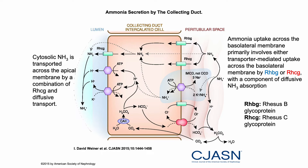The ammonia cycle is complex: it is first generated inside the proximal tubule, goes to the lumen, then into the loop of Henle cell, then to the peritubular space, then into the collecting duct, and back to the lumen. It's a cycle, and I'm just explaining the steps.